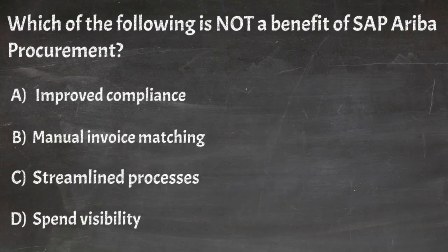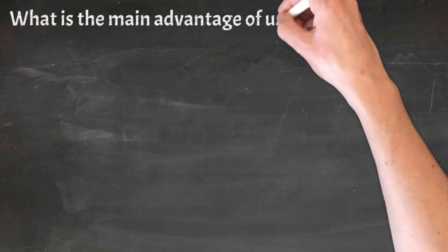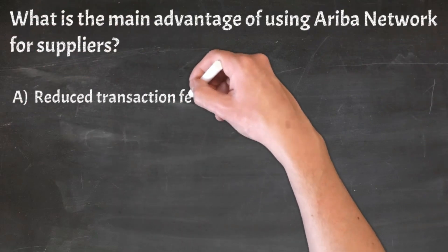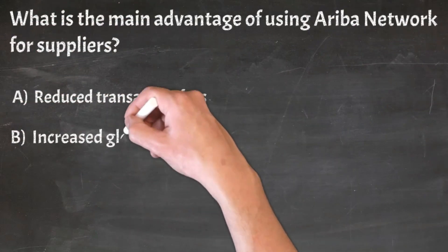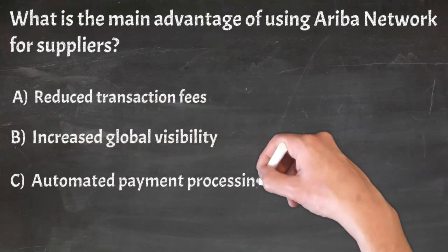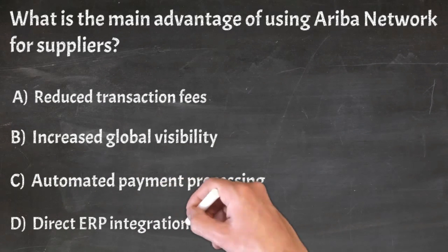Correct answer: B. Manual invoice matching. Question 26: What is the main advantage of using Ariba network for suppliers? A. Reduced transaction fees, B. Increased global visibility, C. Automated payment processing, D. Direct ERP integration.